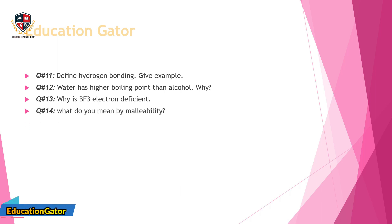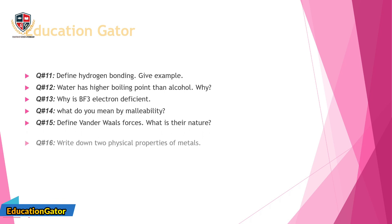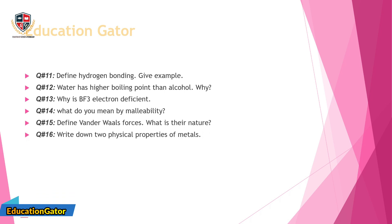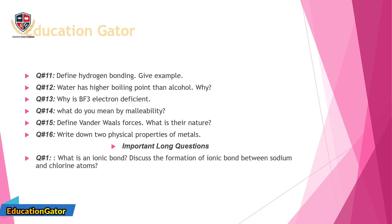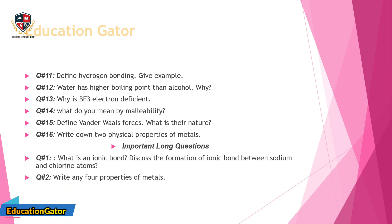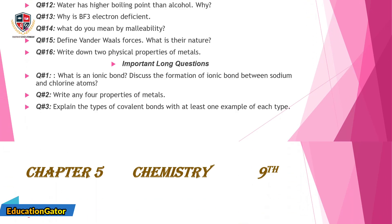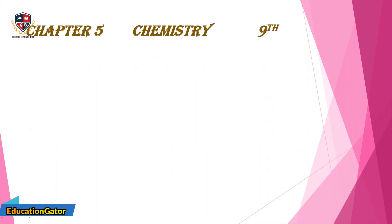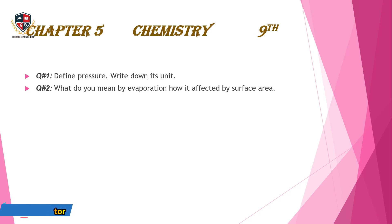Chapter 5, Chemistry 9th. Question 1: Define pressure and write down its unit. Question 2: What do you mean by evaporation? How is it affected by surface area? Question 3: Define the term allotropy with examples. Question 4: Why are liquids mobile? Question 5: Why are gases compressible? Question 6: Define Charles' law.